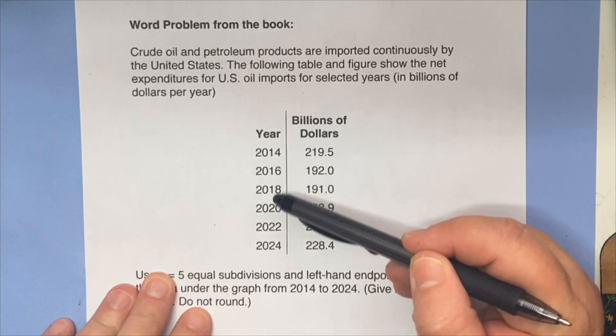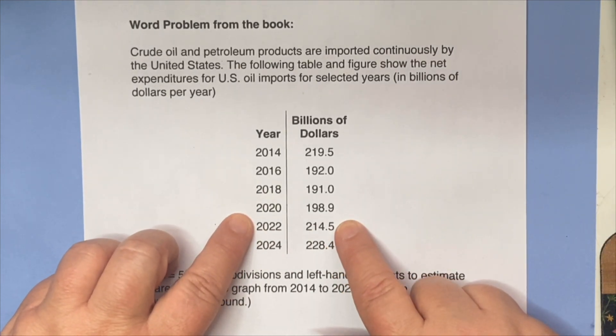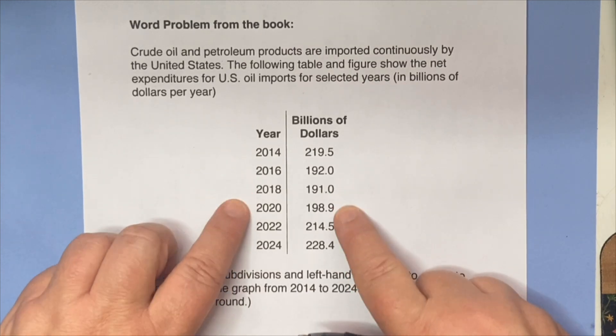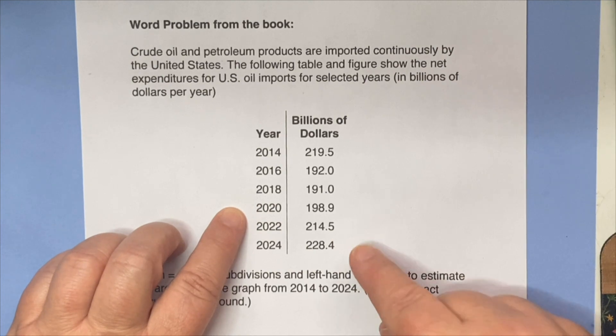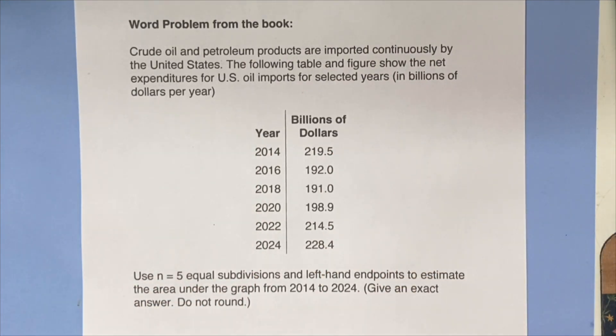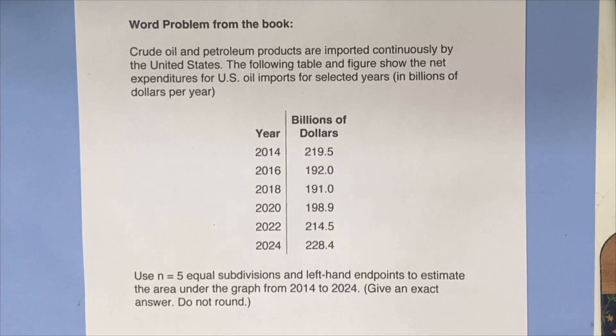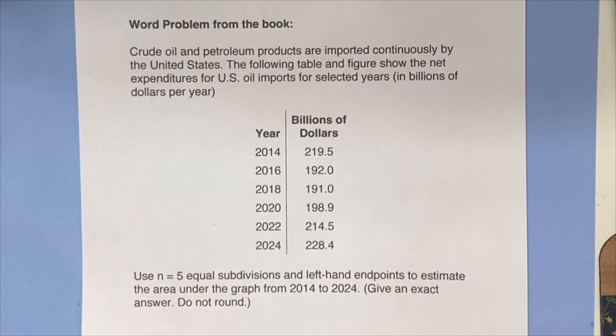But we only have a table of what's happening every two years. You can see 2014, 2016, 2018, 2020, 22, and 24. As of this recording, a few of these are estimates. This is in billions of dollars. So some of these are a projection. And so what can we do if we don't have information for every single day? We just have a few pieces of information. And the answer is we can estimate. We can come at an approximation for the total amount being imported just with this limited information.